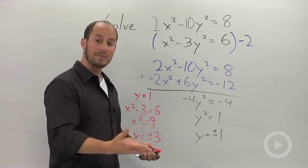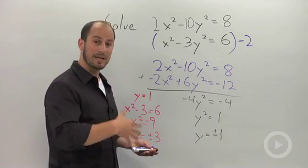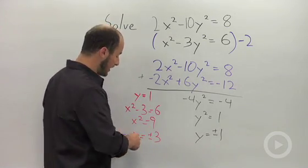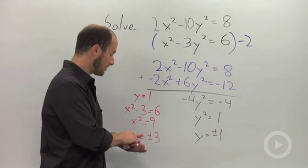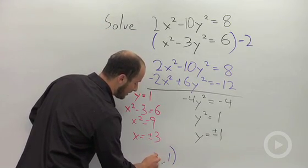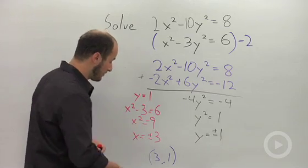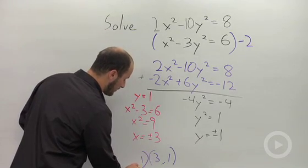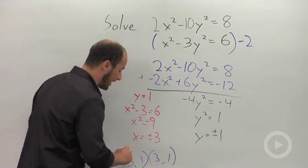What we found is that if y is 1, x could be positive 3 or negative 3. So what we're left with then is two points that could be our solution. We have x is 3, y is 1 or x is negative 3, y is 1.